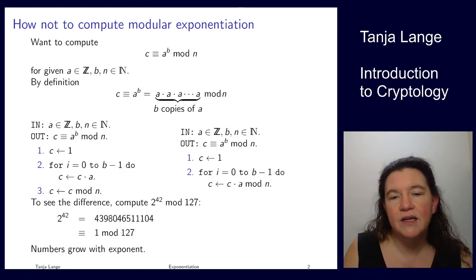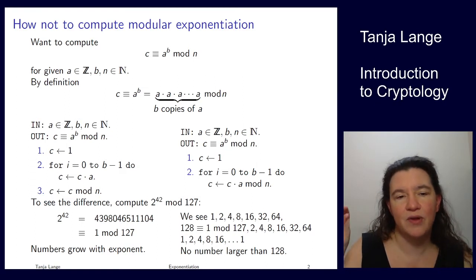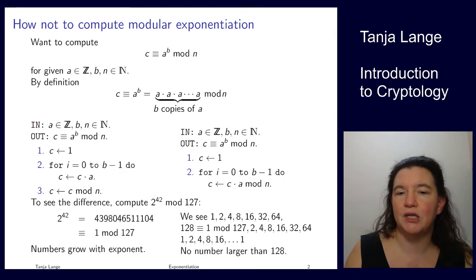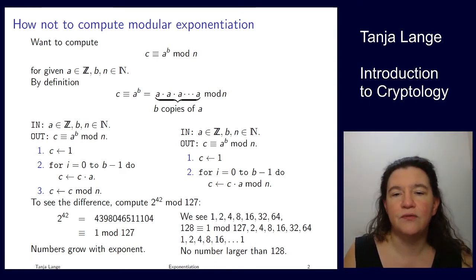To see what happens on the right is that we're starting with, in both cases, initializing at one and then we continue to multiply by two. But in this case, the first six steps we don't see any reductions because the numbers are less than 127. Then at 2 to the 7 we reach 128 which happens to be 1 more than 127.